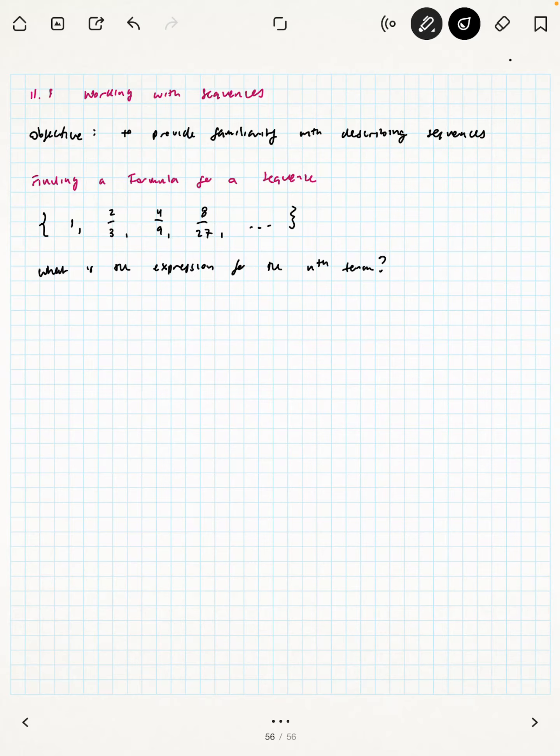So we have one, two-thirds, four-ninths, eight-twenty-sevenths, and so on. This is a sequence. We may be wondering, what is the expression for the nth term? Some tips and tricks here are look for what's changing, look for what's staying the same.